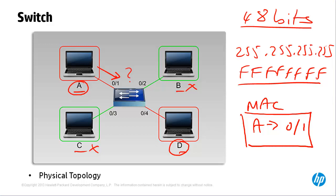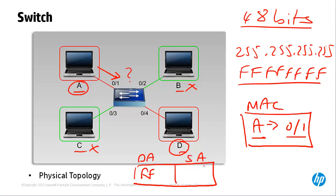In this case, the MAC address table is updated to state that A is on port 01. The switch knows this because it received a frame with a source address of A on that port. In the actual frame, we would see a destination address of all Fs and a source address of A. The switch then updates its MAC address table to show that A is on port 01.